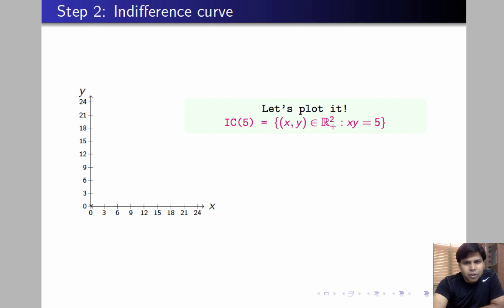Notice that the slope of the IC is given by the ratio of the marginal utilities, which is equal to y by x here. We know that as x increases, y must go down so that x times y stays at 5. So IC is downward sloping, and the way the slope behaves is given by this expression: slope equals y by x.